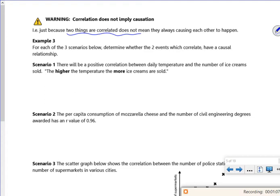So there'll be a positive correlation between the daily temperature and the number of ice creams sold. The higher the temp, the more ice creams sold. Well that kind of makes sense, doesn't it? So I'd say that's causal. There's a causal relationship because it's warmer and people enjoy the treats.